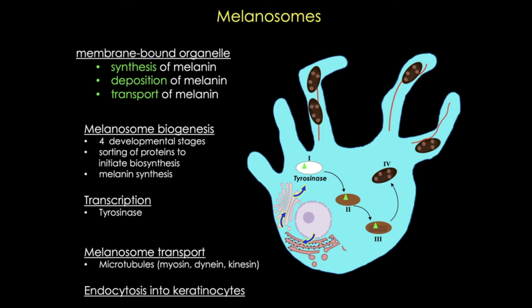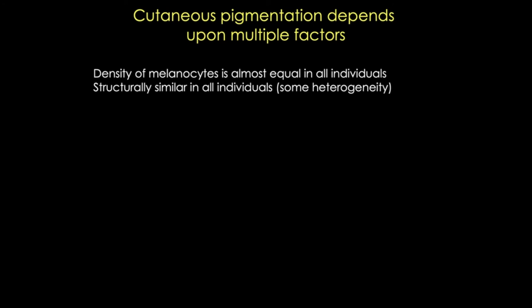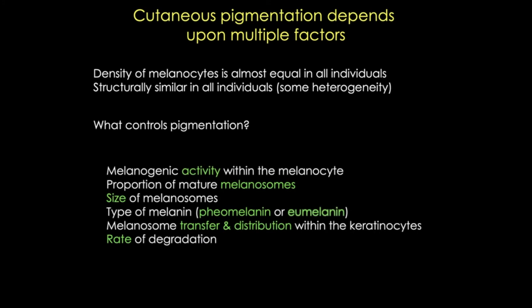Skin pigmentation doesn't depend upon melanocyte number—persons with dark and light skin have equal numbers of melanocytes. So what exactly does it depend upon? It turns out this is complicated. There are multiple contributing factors: increased numbers of melanosomes, increased rate of transfer of melanin to keratinocytes, a specific ratio of eumelanin to pheomelanin, and even differences in where the melanocytes are found in the epidermis. All of these things contribute to the amount of melanin.